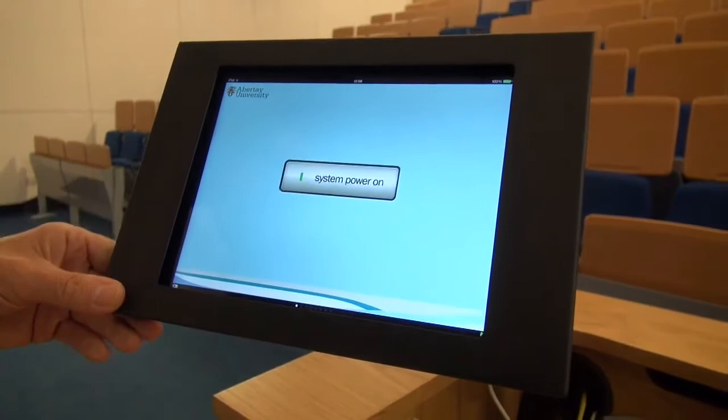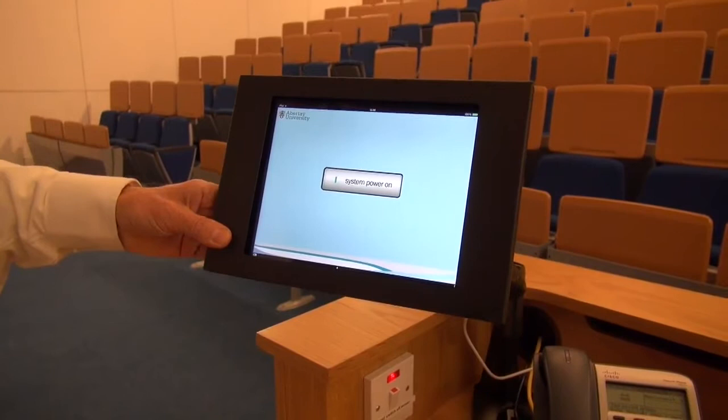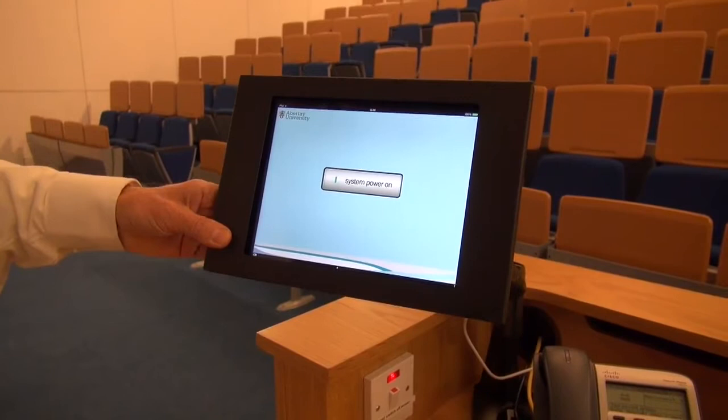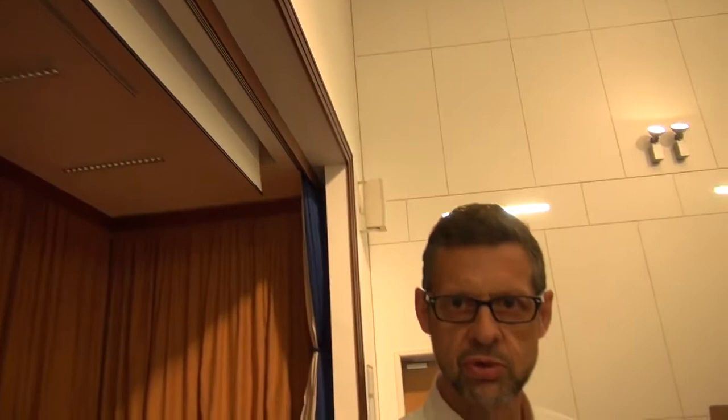Now we're going to take a closer look at our KTouch control interface. This is an iPad and it's mounted securely in a bracket so it prevents theft and any misuse of the device. It's on a flexible arm which allows the user to adjust it for comfort. Simply by touching the panel we can now bring up the control system and the events of turning on the system, lowering the screen and setting up the rest of the facilities in this room.